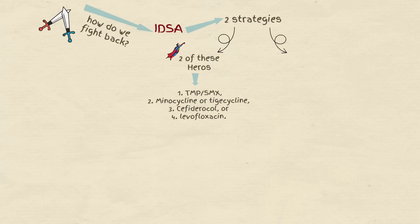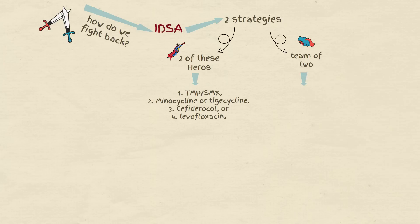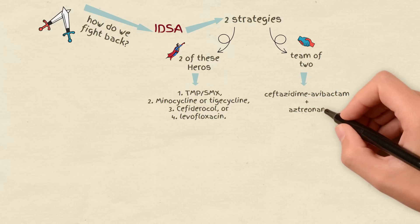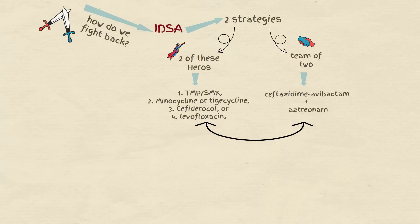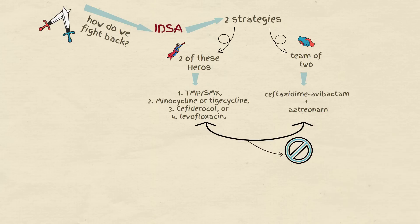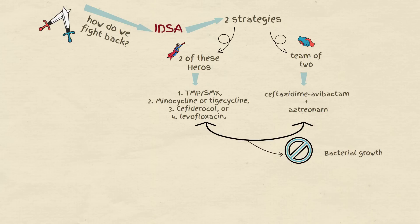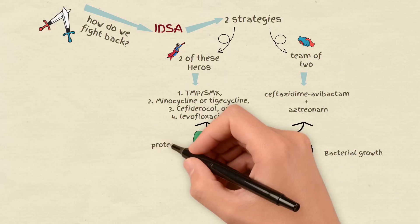Option 2: or team up ceftazidime-avibactam with aztreonam for a dynamic duo. Each of these treatments has its own way of battling germs, from blocking bacterial growth to preventing the bacteria from building their protective walls.